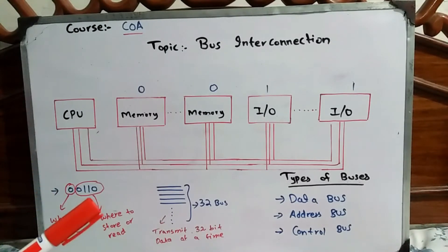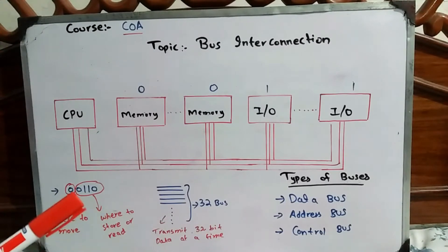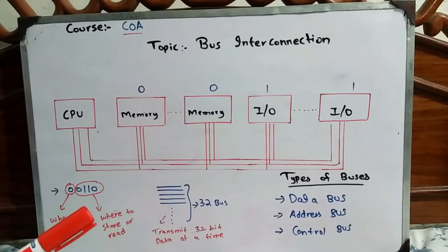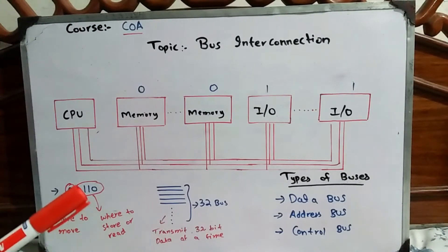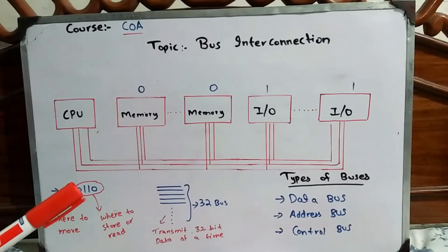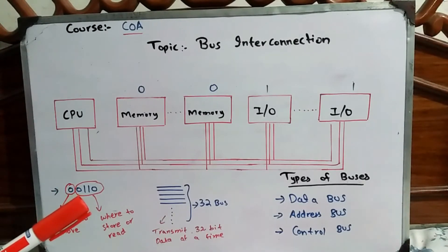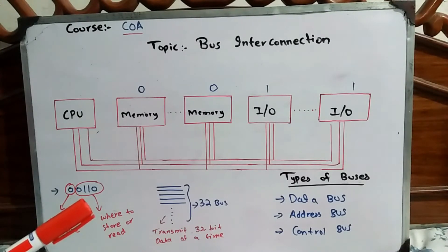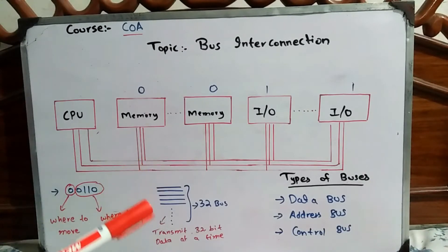The remaining bits will tell you which location you are going to read from or write to in memory, or with the input and output devices. The remaining bits will indicate the exact location where you have to read or write.